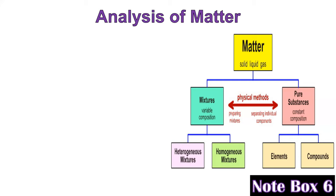Heterogeneous means unevenly mixed; homogeneous means evenly mixed. Homogeneous mixtures include air, which has the same amount of oxygen wherever you breathe, and sugar dissolved in hot tea, where the sugar is evenly spread throughout. Heterogeneous mixtures are uneven, such as salad dressing or a bag of assorted nuts and bolts.